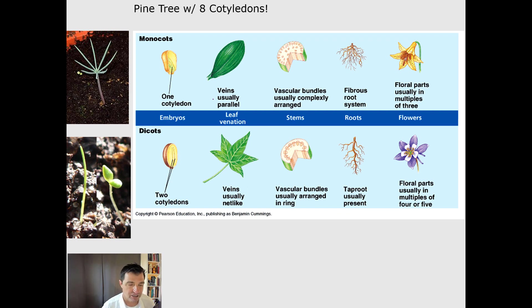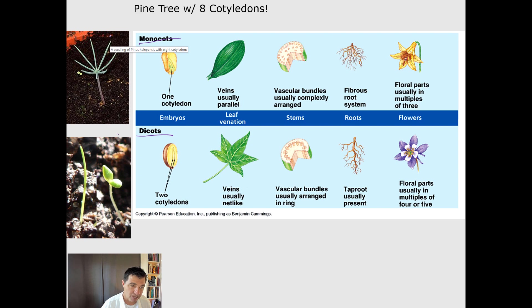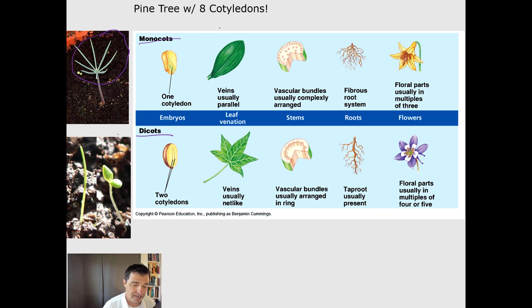We can also talk about the evolution of plants. Two major groups of flowering plants we'll discuss are the monocots and the dicots. This is separate from pine trees, which are not angiosperms but instead are gymnosperms. Among the flowering plants, if you had a monocot and a dicot plant, there are a couple of key differences.